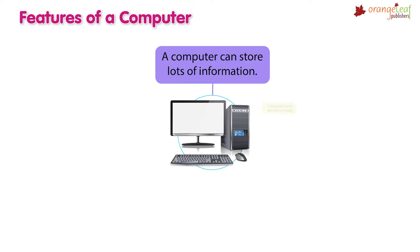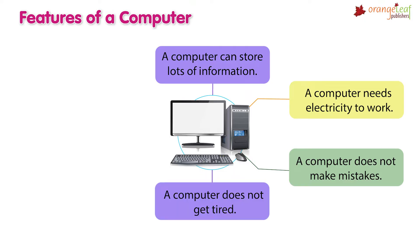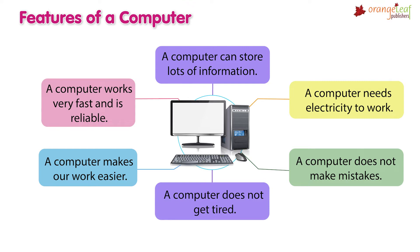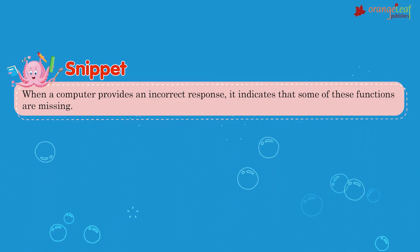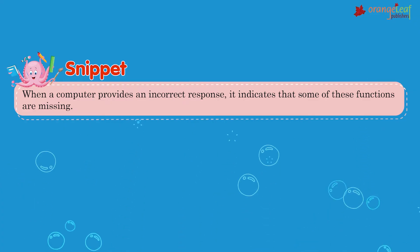Features of a computer: a computer can store lots of information. A computer needs electricity to work. A computer does not make mistakes. A computer does not get tired. A computer makes our work easier. A computer works very fast and is reliable. When a computer provides an incorrect response, it indicates that some of these functions are missing.